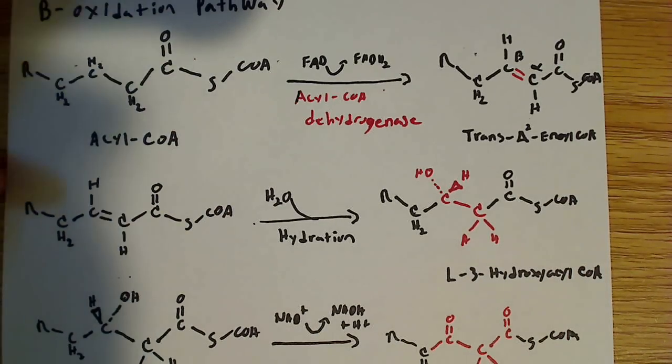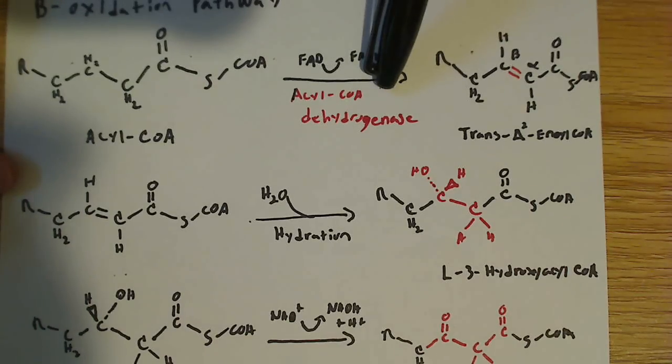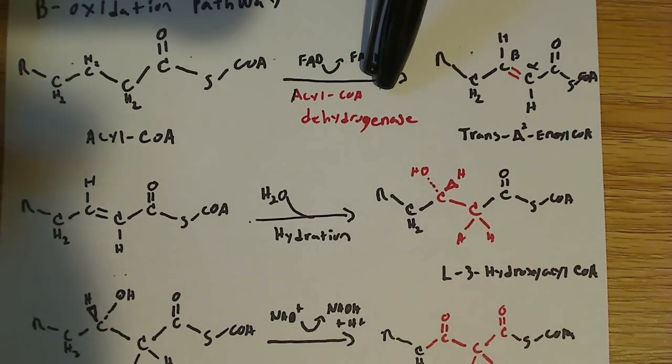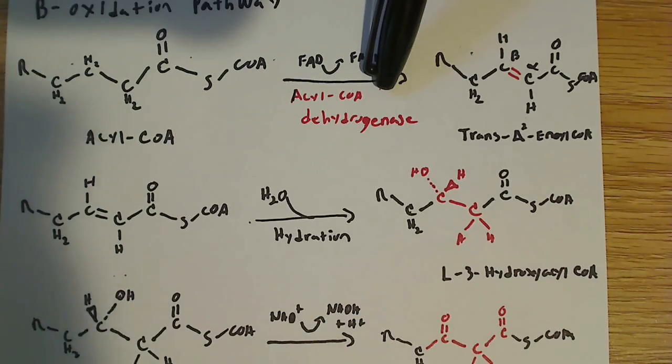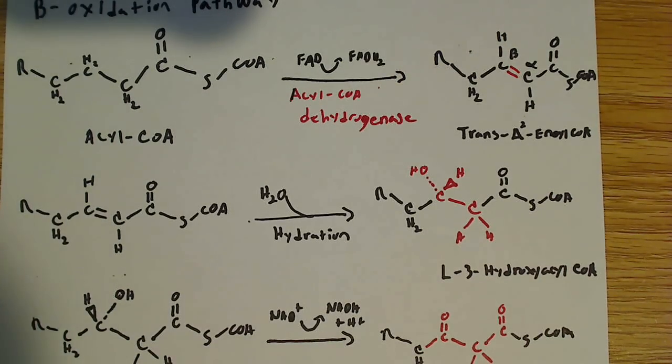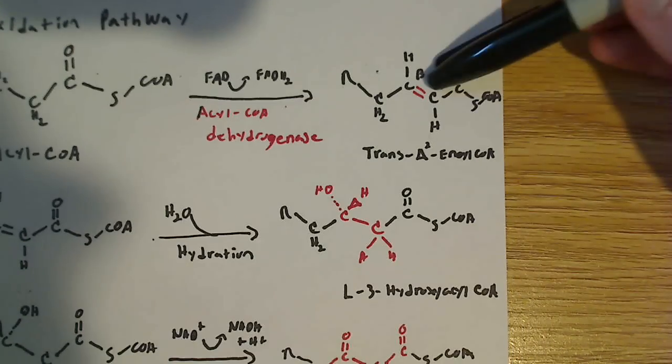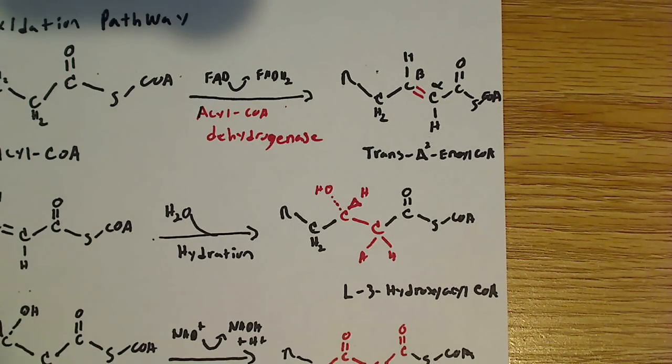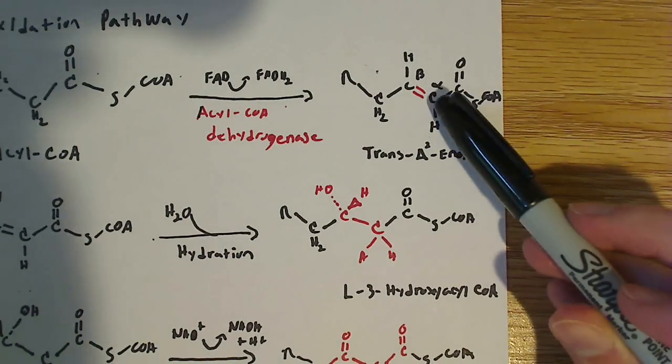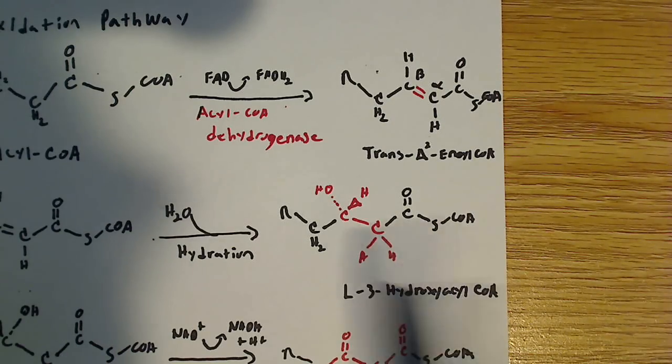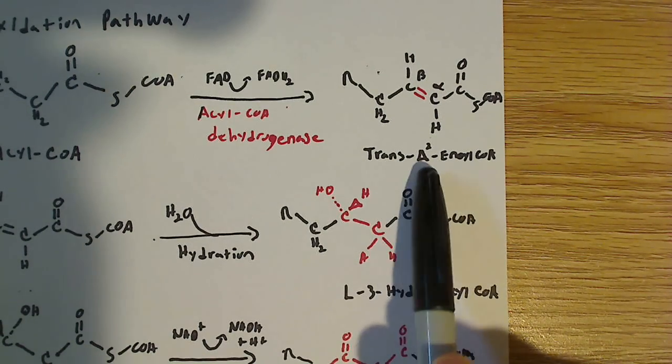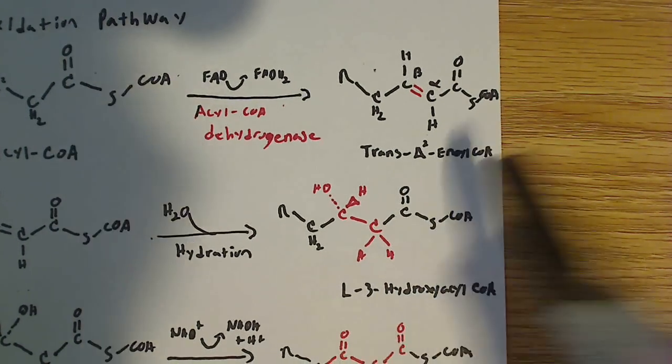And the enzyme that's going to carry out this reaction is acyl-CoA dehydrogenase. So acyl-CoA dehydrogenase is going to catalyze the reaction. And essentially what that's going to do is it's going to form this double bond here. And it's going to form this double bond between carbons 2 and 3. And that molecule is known as trans-delta-2 enoyl-CoA.